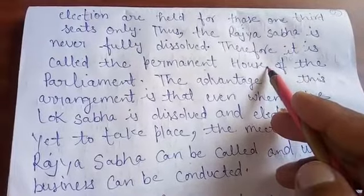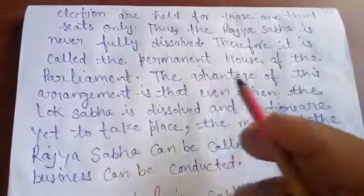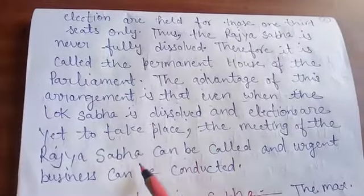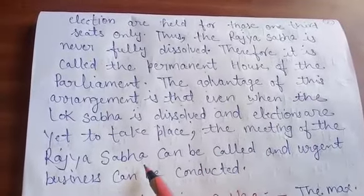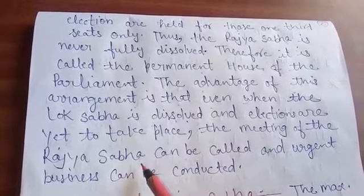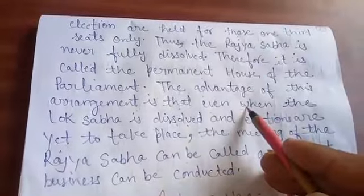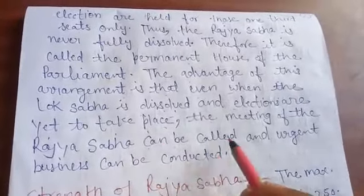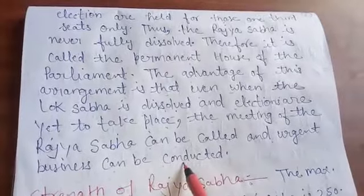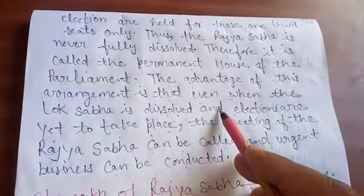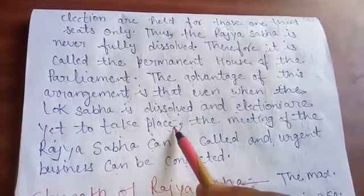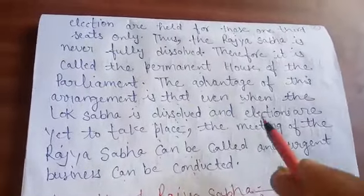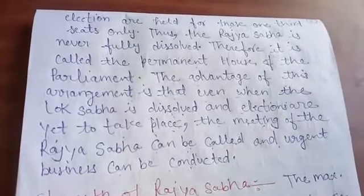What is the advantage of Rajya Sabha being a permanent house? The advantage of this arrangement is that even when the Lok Sabha is dissolved — because after every five years, Lok Sabha is dissolved completely and elections take place for all seats — when the Lok Sabha is dissolved and elections are yet to take place, the meeting of the Rajya Sabha can still be called and urgent business can be conducted. If there is an urgent matter in front of the country at that time, the meeting of Rajya Sabha can be called to discuss it.